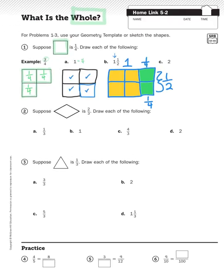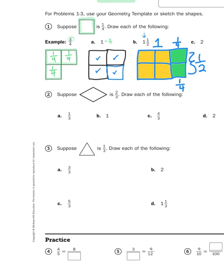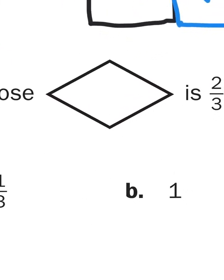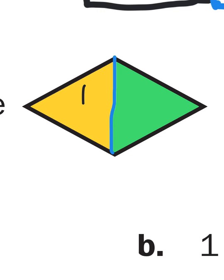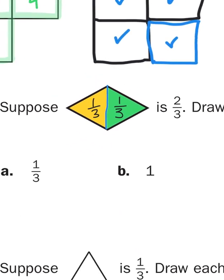Now let's take a look at problem number two. It says: suppose this diamond, or rhombus, is two-thirds. Draw each of the following. Now wait a minute — two-thirds? I just see one shape there. How could that one shape be two-thirds? Well, again thinking in terms of Legos, instead of seeing this shape as one piece, let's look at it as two pieces. I'm just going to cut it in half like that. So I've now divided my one shape into two parts — here's a part, and here's a part. And what are each of those parts? Well, if each of those parts make up two-thirds when combined, if I think about those parts individually, each part is a third. One-third plus one-third gives me two-thirds.